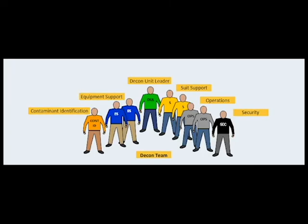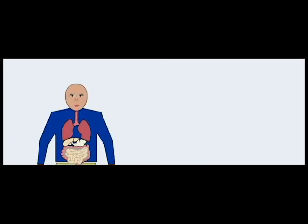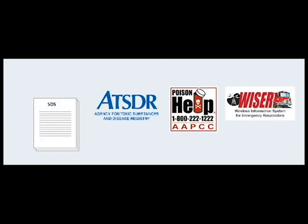Hazmat emergency decontamination decisions should be based on existing information if available. If not available, response decisions should be based on the patient's symptoms and possibly other clues gained from interviewing the victim or others. Multiple resources may need to be utilized to gather good chemical data. Excellent resources include the poison control center, the fire service, members of local industry, and various online resources.